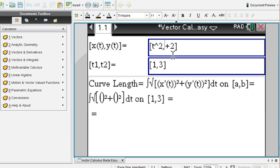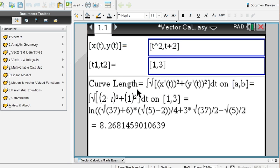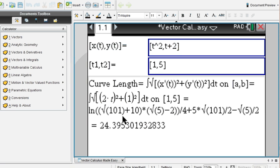Maybe lastly, curve lengths of a parametric equation, so you enter your parametric equation right here, you will remember your curve length formulas given to you right here, so we got to know the derivatives of x of t and y of t, plug them in here, and evaluate numerically the integral over the interval from 1 to 3, and we end up with 8.26. If we change our interval from 1 to 5, the curve length is of course longer.